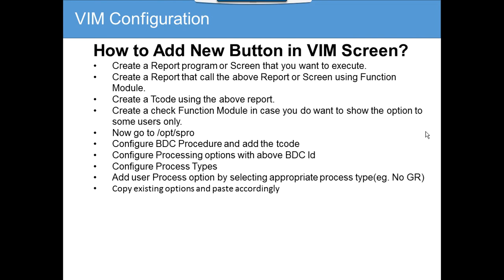So you might want to build a custom BDC. The next portion is to create a report that calls the above report or screen using a function module. You can put a function module like a BDC, and then you can create a key code using the above report. In this case, we want to make sure that all the information from the VIM screen is passed into this new screen.